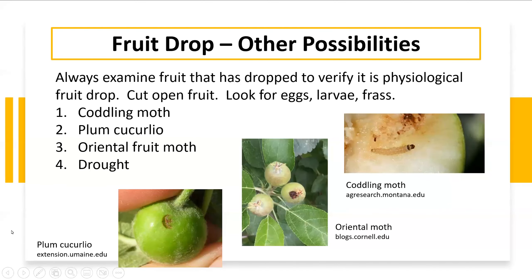There are some other possibilities as to why there might be fruit drop, so we want to look at those. June drop is natural — it just naturally occurs — but we also want to look at the fruit once it actually falls to the ground, as there are different things that could be happening.